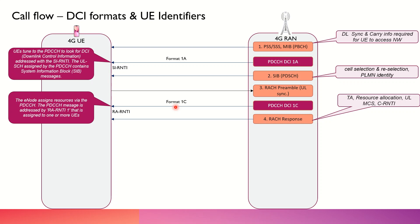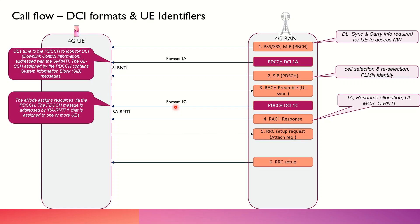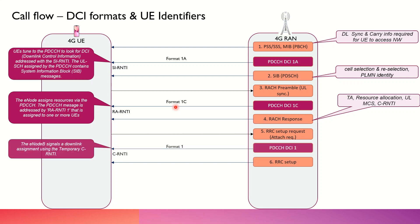Next is the RRC Setup Request — normally it is an attach request — and there is an RRC Setup coming from the base station. In between that, again there is a DCI format 1 which is being used, and in this case there is a temporary ID again allocated to the UE by the eNodeB.